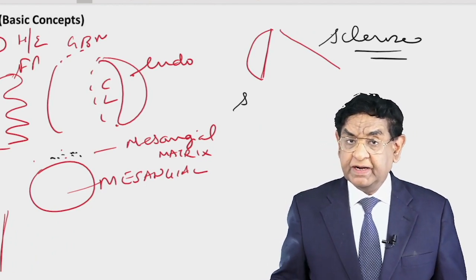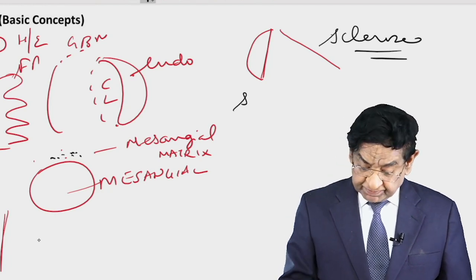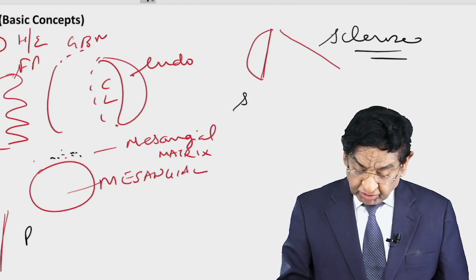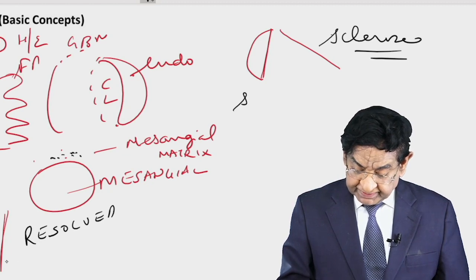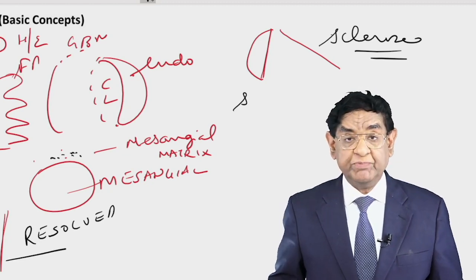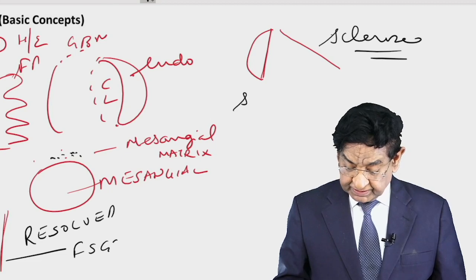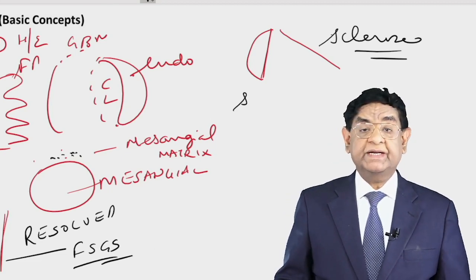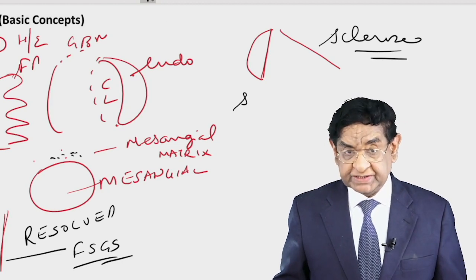In minimal change disease, the condition resolves most of the time on its own. Very rarely, minimal change disease can progress to FSGS. Many authorities talk about minimal change and FSGS belonging to the same spectrum of disease.